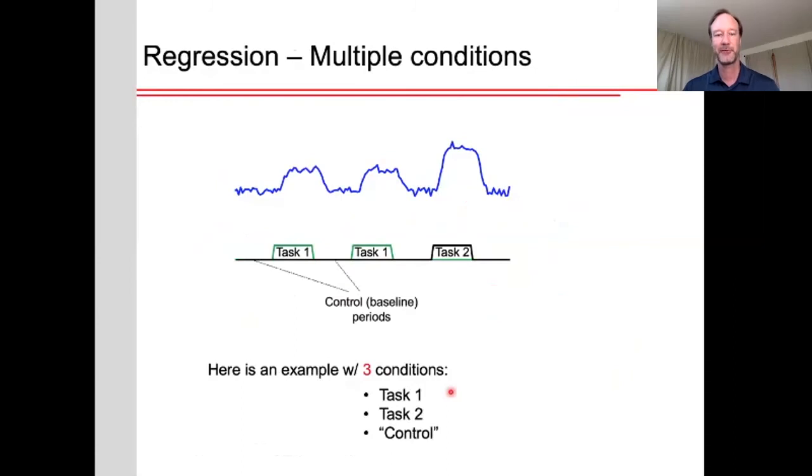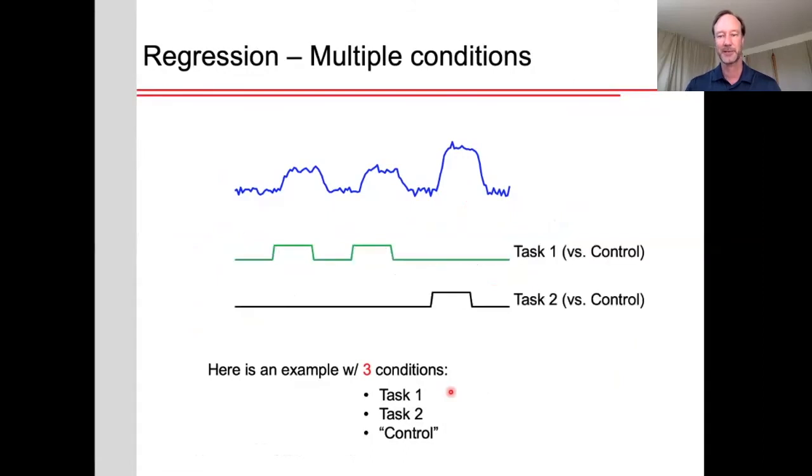Now, let's consider if we have multiple conditions. So let's say we have two tasks versus a control. So note here, actually, there's three conditions going on. There's task one, task two, and whatever we decide is the control or baseline. So in this case, the way we would model this is first we would create a regressor of task one versus the control and another regressor of task two versus control. We would convolve each of these with the hemodynamic response function and then fit the sum of both of these to the data.